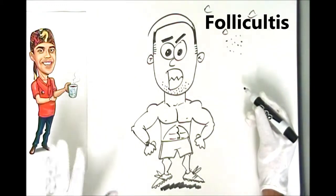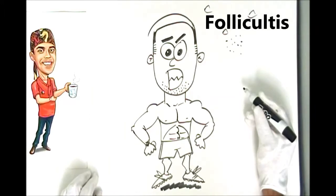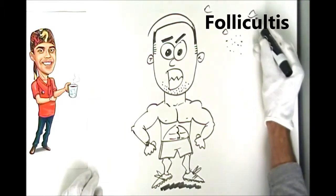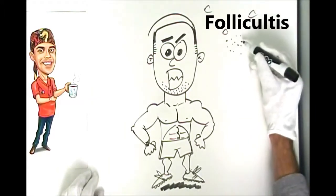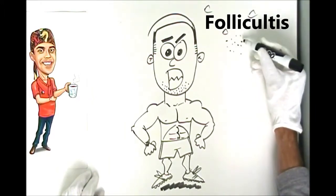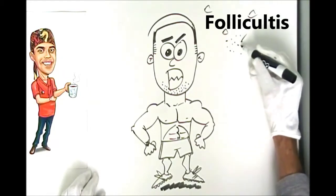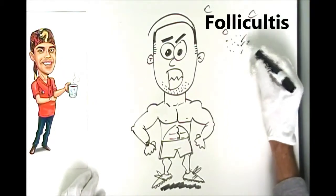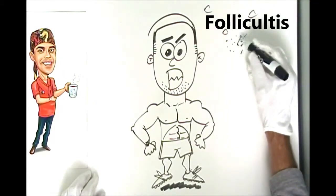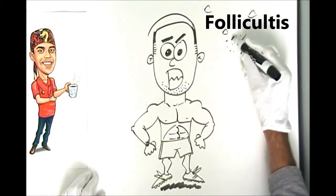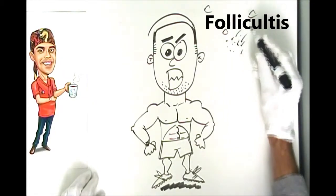The third key difference between acne and folliculitis is that with acne it's just regular skin around the bumps. With folliculitis, if you look closely, each of the little red bumps has a hair associated with it — there's a hair sprouting from each one.